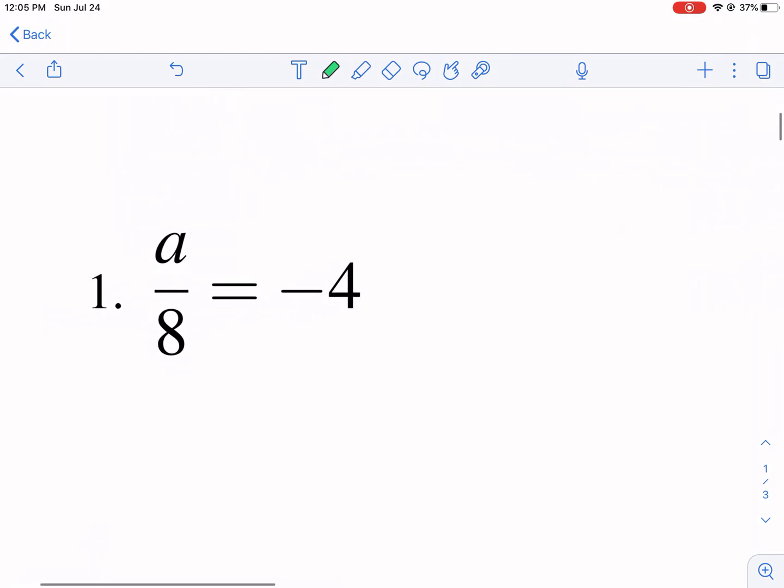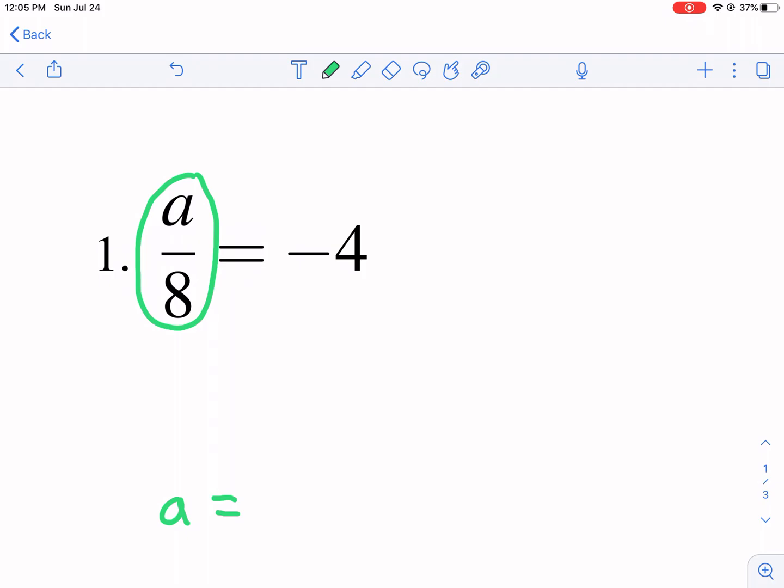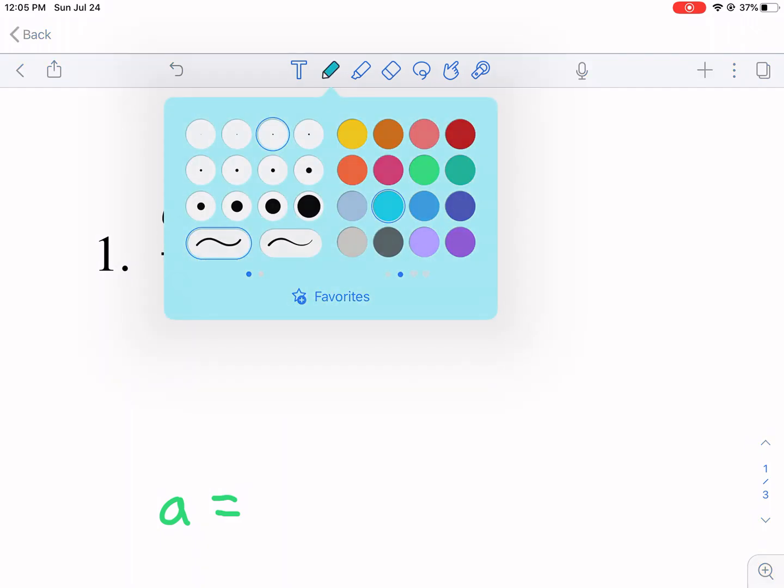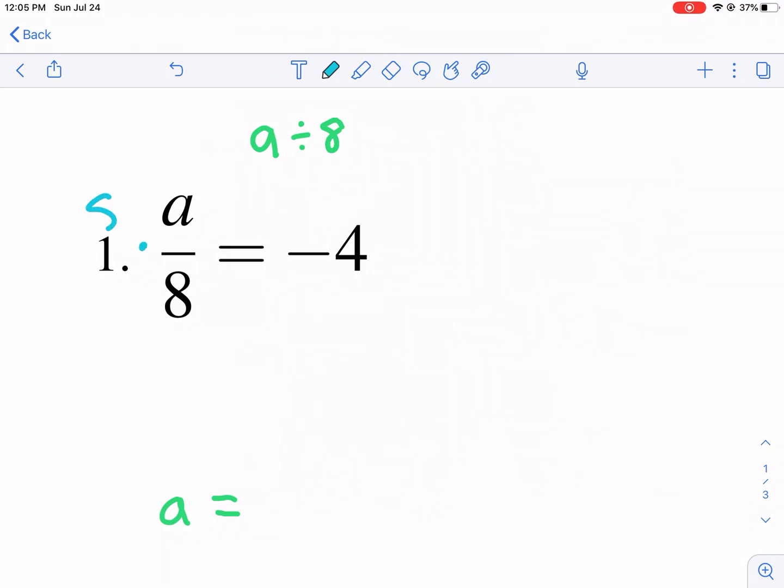Another way of saying it is one and two step equations. So our goal is to get the variable by itself. We want a to be equal by itself. What do we have happening to a? That's the first step. This essentially means a divided by 8. So if we want to undo that and get a by itself, how do you undo dividing by 8? To undo operations of math, we multiply when we divide. We do the opposite operation.